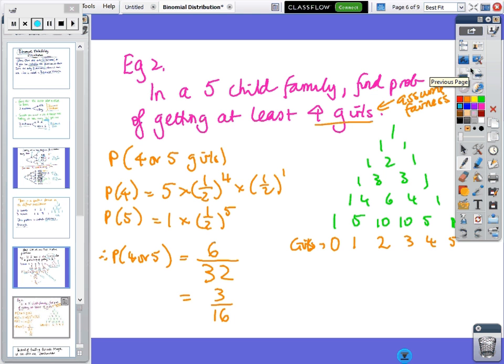Example two: In a five-child family, find the probability of getting at least four girls. So five children - we've got none, one, two, three, four, five. So we're on this line here.